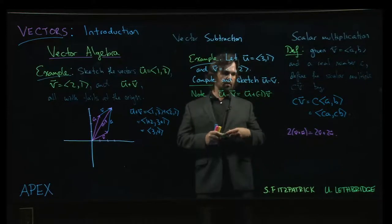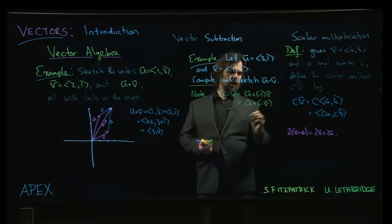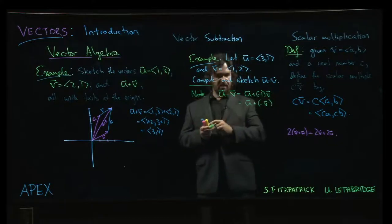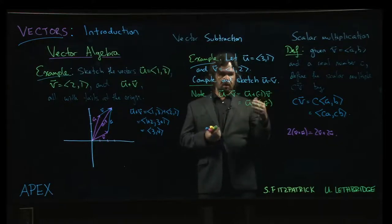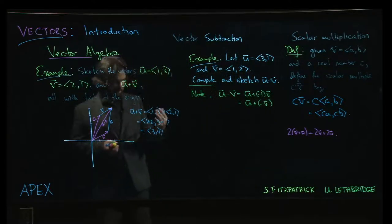Or if you want, simply u plus negative v, where negative v is just v but with minus signs, the sign changed on each of the components. We sort of looked at that earlier.